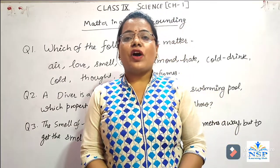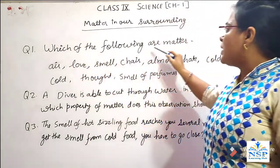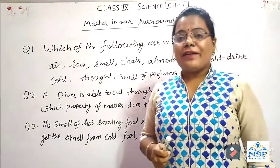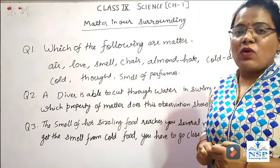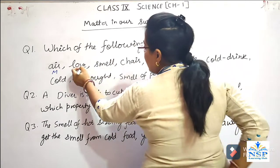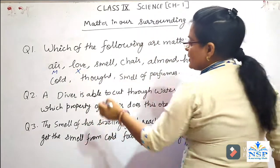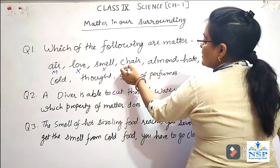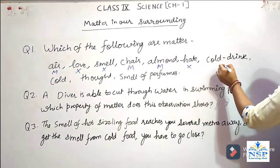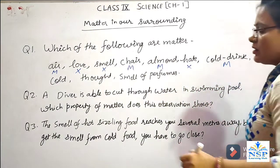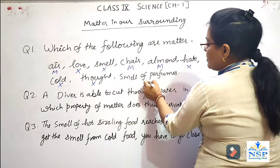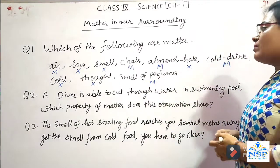Now it's time for questions. Question 1: Which of the following are matter? We know the substance which has mass and occupies space is called matter. Air is matter because it has mass. Love is not matter — it's a feeling. Smell is not matter. Chair is matter. Almond is matter. Heat is not matter. Cold is not matter. Hot is not matter.